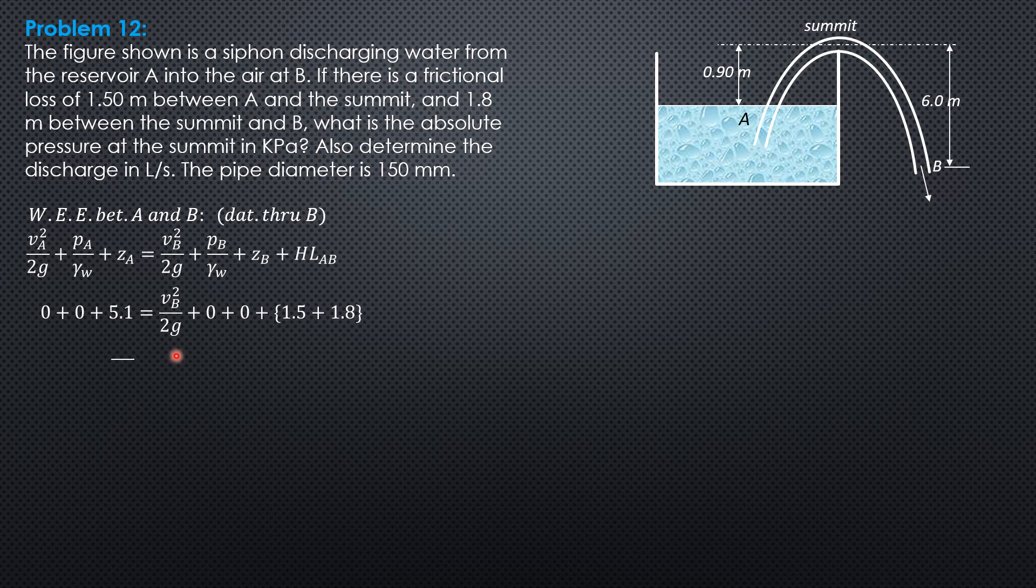So from here, we can compute velocity head at B, 1.8. By the way, 5.1 is 6 minus 0.9. So from here, we can solve velocity at B, which is 5.943 meters per second.